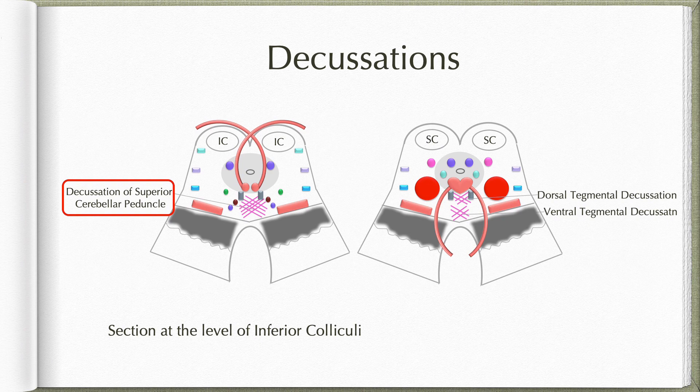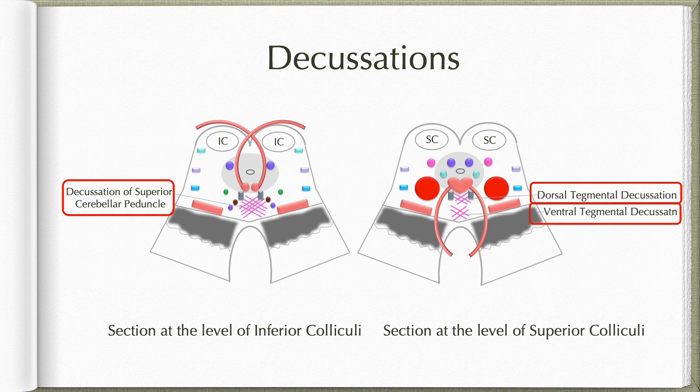At the level of superior colliculi, we find two decussations: a dorsal tegmental decussation and a ventral tegmental decussation. Dorsal tegmental decussation fibers begin from the superior colliculi. They wind round the periaqueductal gray, cross in the dorsal tegmental decussation, and project to the contralateral spinal cord as the tectospinal tracts. These tectospinal tracts descend through the brain stem on either side of the midline just anterior to the medial longitudinal fasciculi. When they reach the spinal cord, they are found in the ventral funiculi.